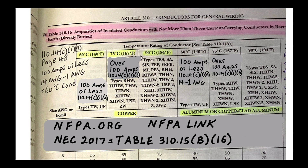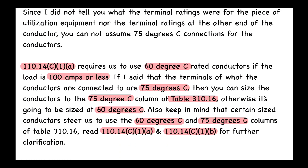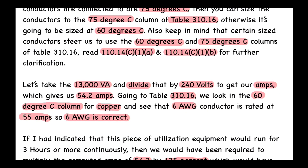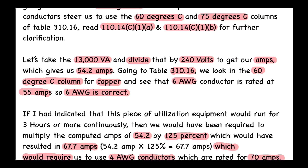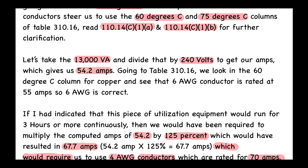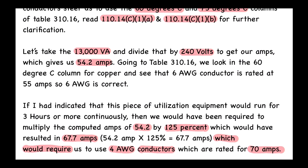Let's go back to the question. After our math we found 54.2 amps, and we need a conductor rated for at least that. Let me draw out the PIE formula, which you should always sketch out when a question involves VA, volts, amps, and resistance.